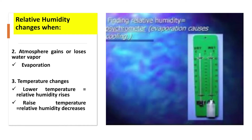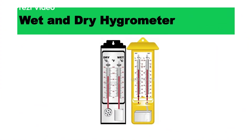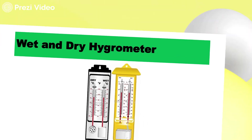Humidity is normally measured using hygrometers. You must have done this experiment with wet bulb and dry bulb measurements in the lab. In the wet bulb you use cotton soaked in water. These are the two techniques widely used in labs for measuring relative humidity using wet and dry hygrometers.